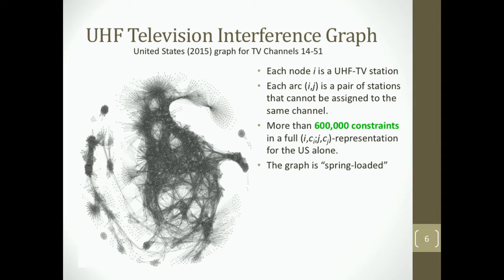This is a spring-loaded representation of the constraint graph, and as you can see, it's mostly a total mess. The spring-loading identifies some features — you can see cliques, for instance in the Chicago area where any two stations must have different channels. But particularly in the Northeast and throughout much of the U.S., we have quite a dense set of connections. There are more than 600,000 constraints — it turns out when you count individual channels, it's two and a half million constraints that have to be respected.